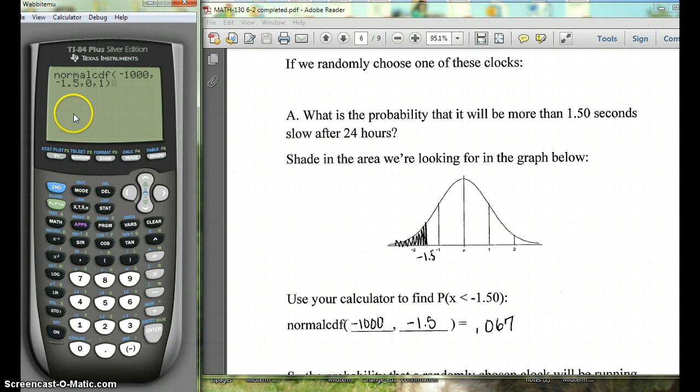So this is going to bring you back here to the home screen. Now, if you just have an 83, it would have brought you to the home screen with normal CDF, and you would have typed in negative 1,000, comma, negative 1.5. Now, the 0 and 1 is actually unnecessary. You can actually just close the parentheses and hit enter, or you can leave it there. And here we see that we get about 0.067, if we round to three decimal places.